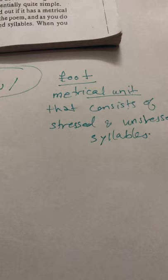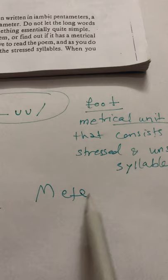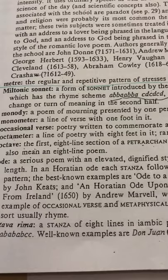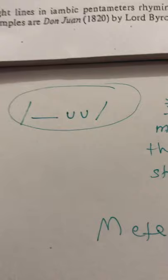What's the definition of the word meter? You can go to the literary glossary, almost page 37. The definition is: meter is the regular and repetitive pattern of stresses in poetry. So this is the sign of the stressed syllable and the sign of the unstressed syllables in poetry.